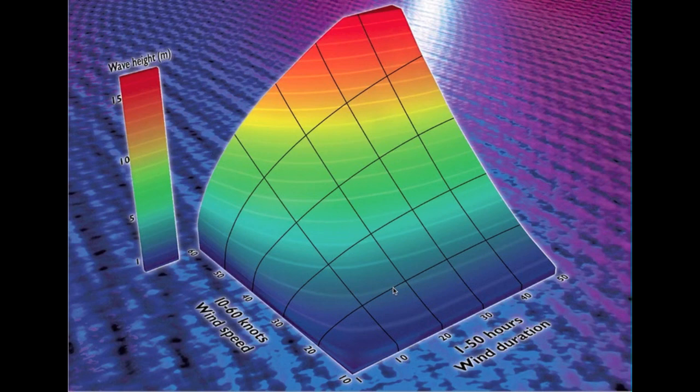Now as we go to 30, the third example, that's a pretty strong breeze. And you can see the side of this hill, if I could call it that, is getting very steep. So in 30 knots you can see you reach 1 meter very quickly, 2 meters in just a few hours, 3 meters. Now these are pretty serious waves in under 10 hours.